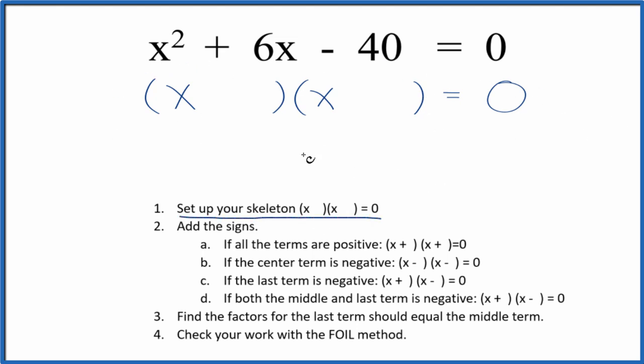And this is the skeleton equation right here. After we've done that we want to add the signs into our skeleton equation. So I see that I have a positive and a negative. If the last term is negative we're going to put a positive here and then a negative here in our skeleton equation, so that's going to help us along.